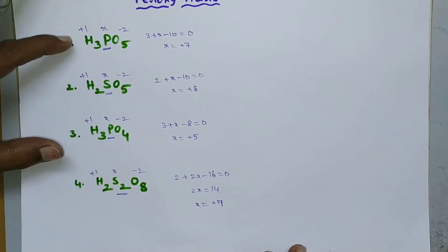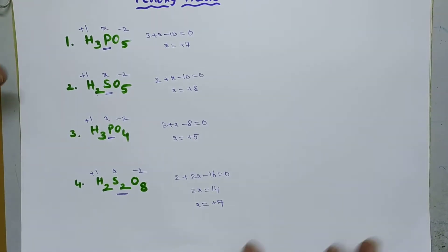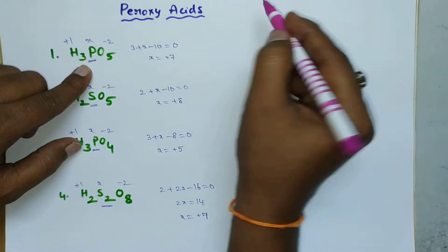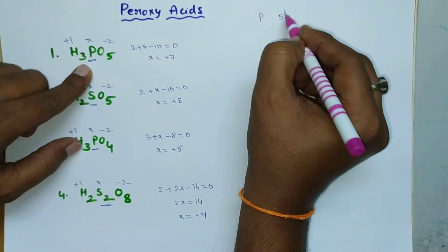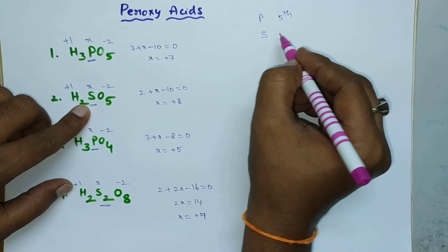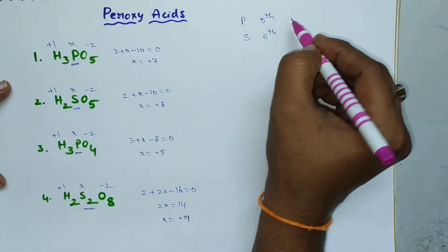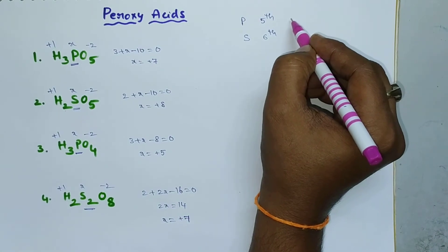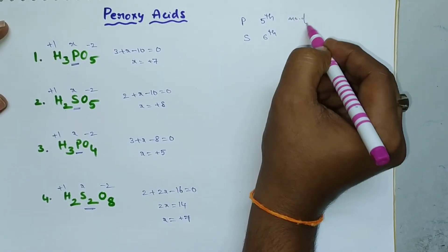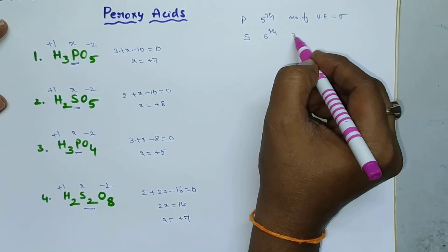Now, phosphorus belongs to the fifth group element and sulfur belongs to the sixth group element. That means phosphorus has 5 valence electrons and sulfur has 6 valence electrons.